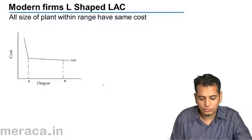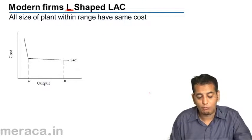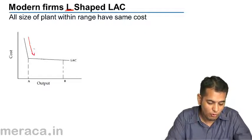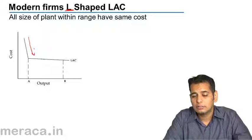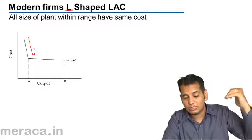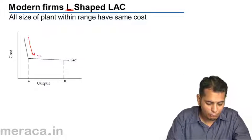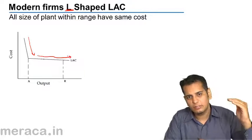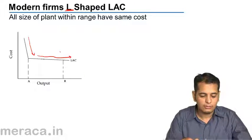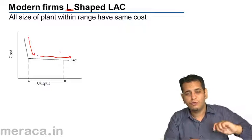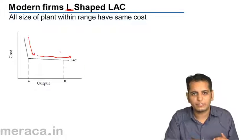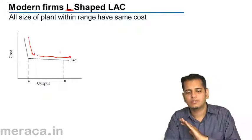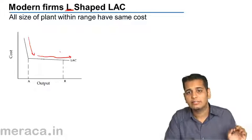The long run average cost curve will be L-shaped. Now why will it be L-shaped? It is because when the firm shifts to a better technology, the cost of production will fall steeply — it will come down sharply. And then after a point, it will settle there. It will go on reducing, but not by much. This gives the curve the L-shape. Because of switching or upgrading of technology, the cost per unit comes down sharply, and then after some time it settles — and this gives the curve its L-shape.